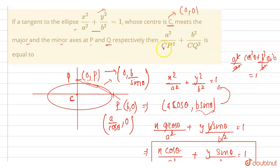So we have to find this quantity. So what is CP? CP is the length of this point. This point here. So how do we find the distance?